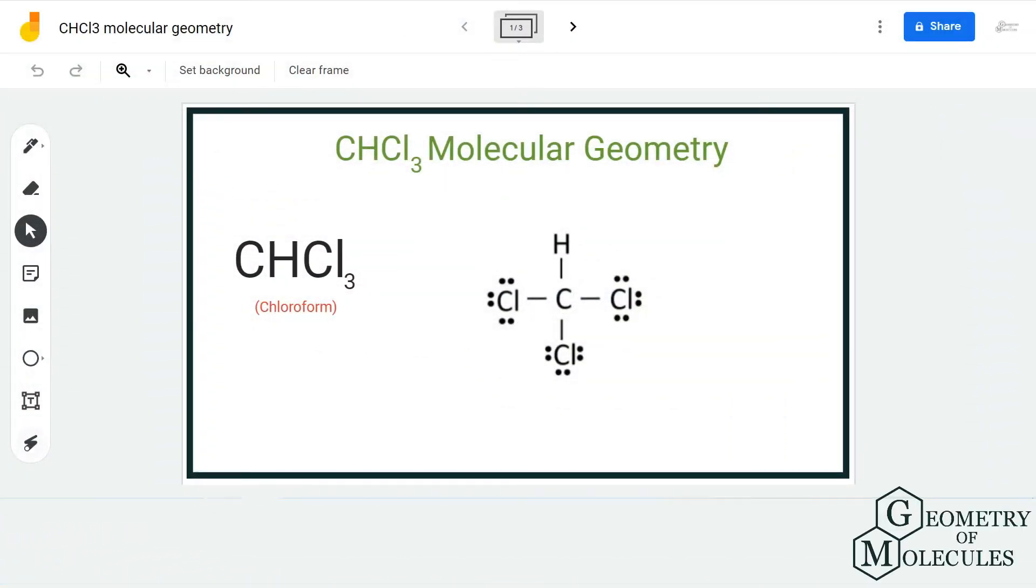Hi guys, welcome back to our channel. In today's video, we are going to help you determine the molecular geometry of CHCl3. It is made up of one carbon, one hydrogen, and three chlorine atoms. To understand its molecular geometry, we are first going to look at the chloroform Lewis structure.